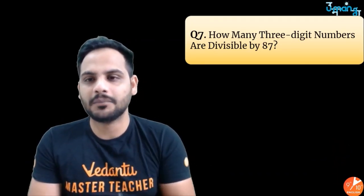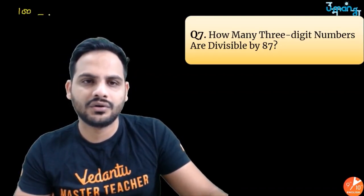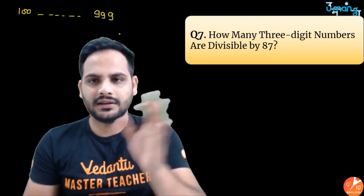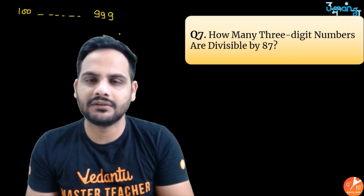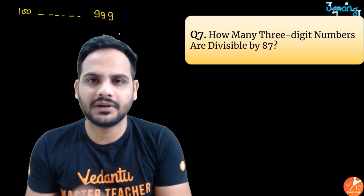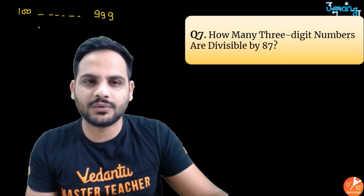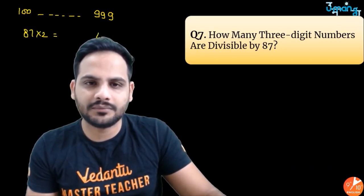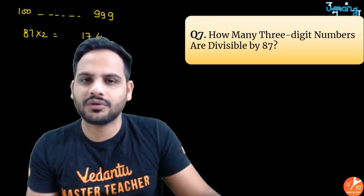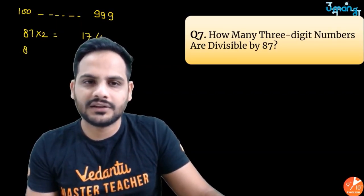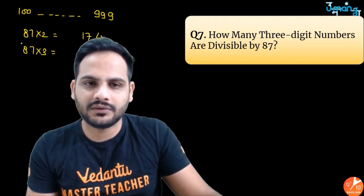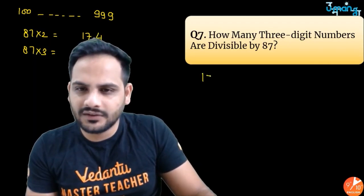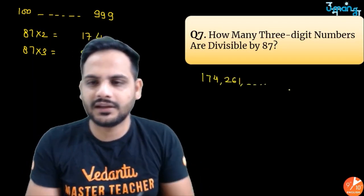This was your homework question: how many three-digit numbers are divisible by 87? Three-digit numbers range from 100 to 999. Since 87 itself is a two-digit number, 87×2 = 174 is the first three-digit multiple. The next number is 87×3 = 261. You can clearly see an AP is being formed.